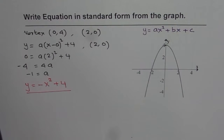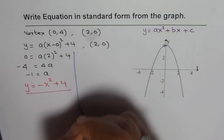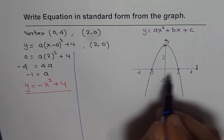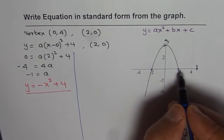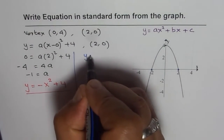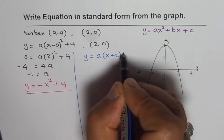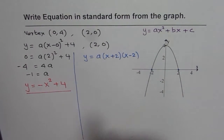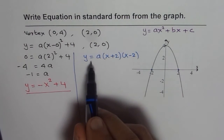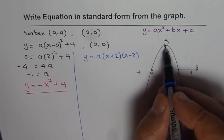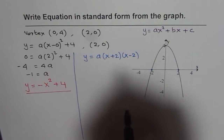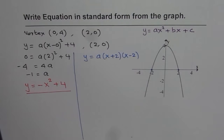Now let us do the same exercise using intercept form. We have two x-intercepts: one at plus 2 and the other at minus 2. These two x-intercepts give us the equation Y equals A times (X plus 2) times (X minus 2). The factor (X plus 2) corresponds to the zero at minus 2. We now use the third point, the vertex (0, 4), to find A.